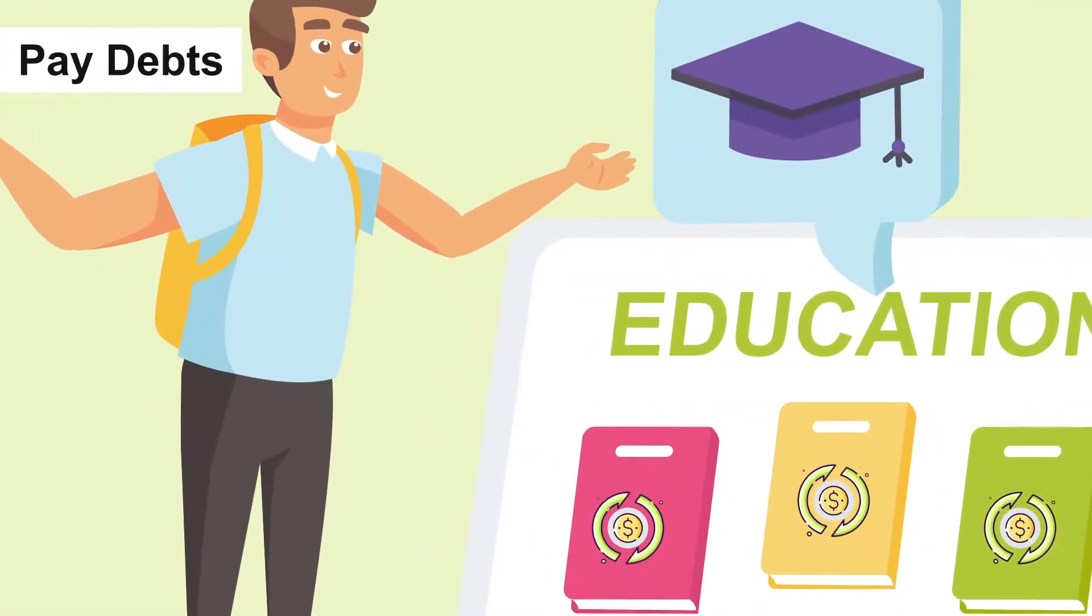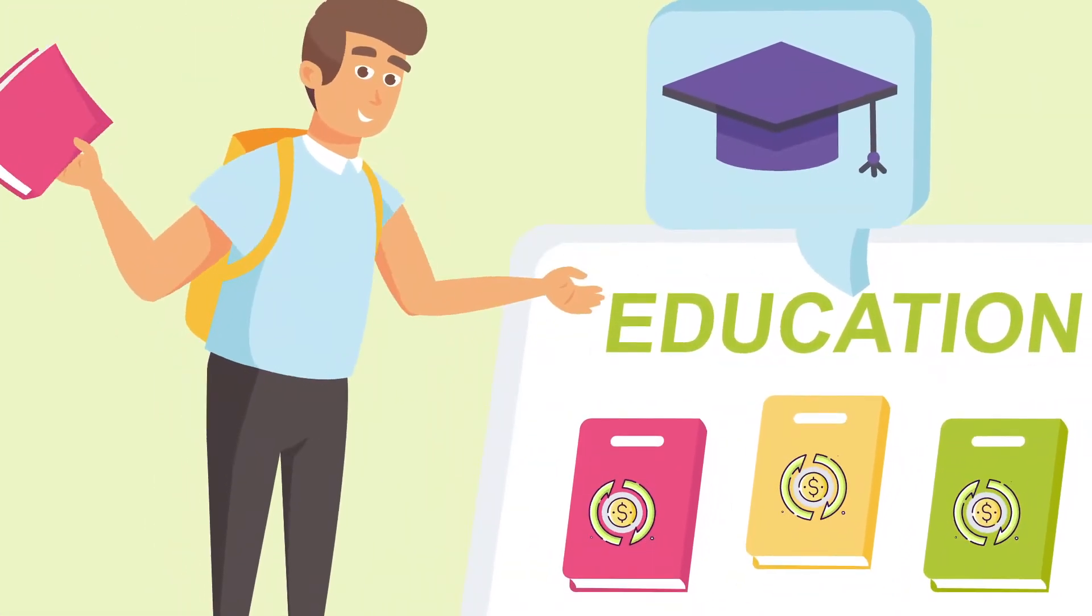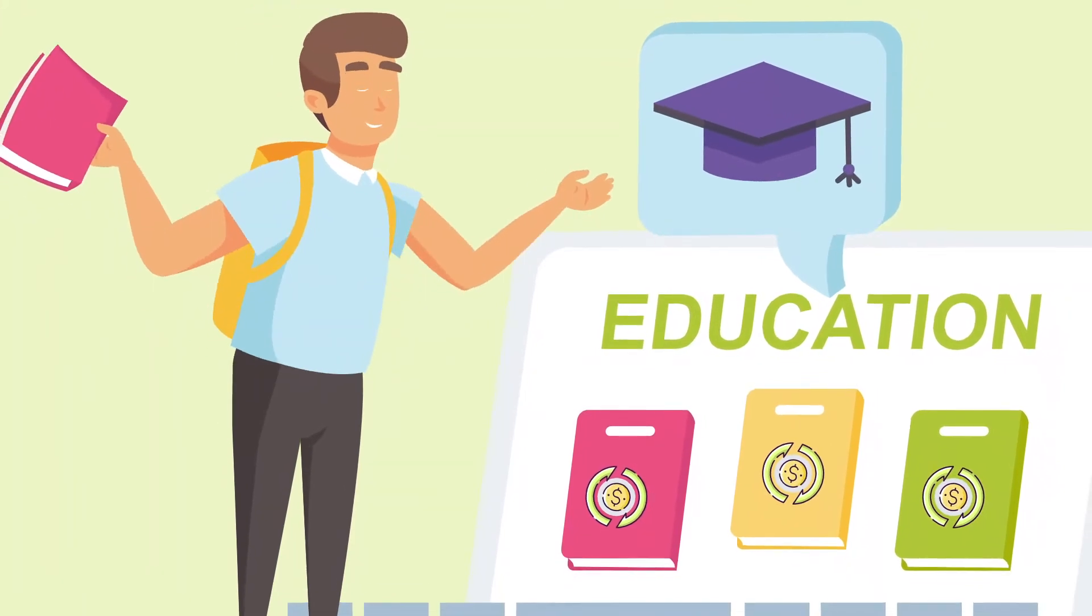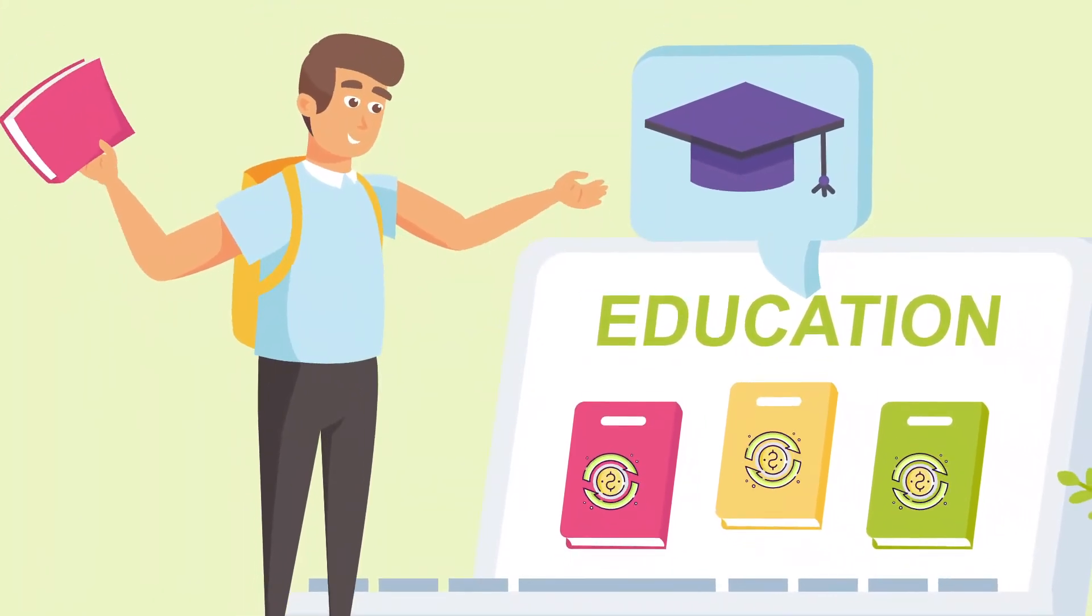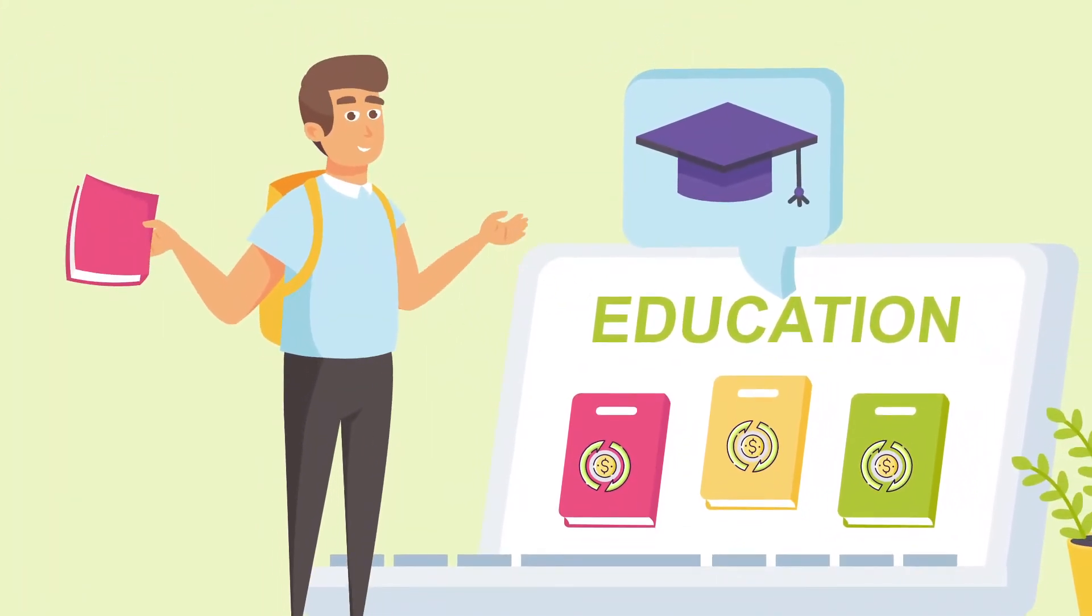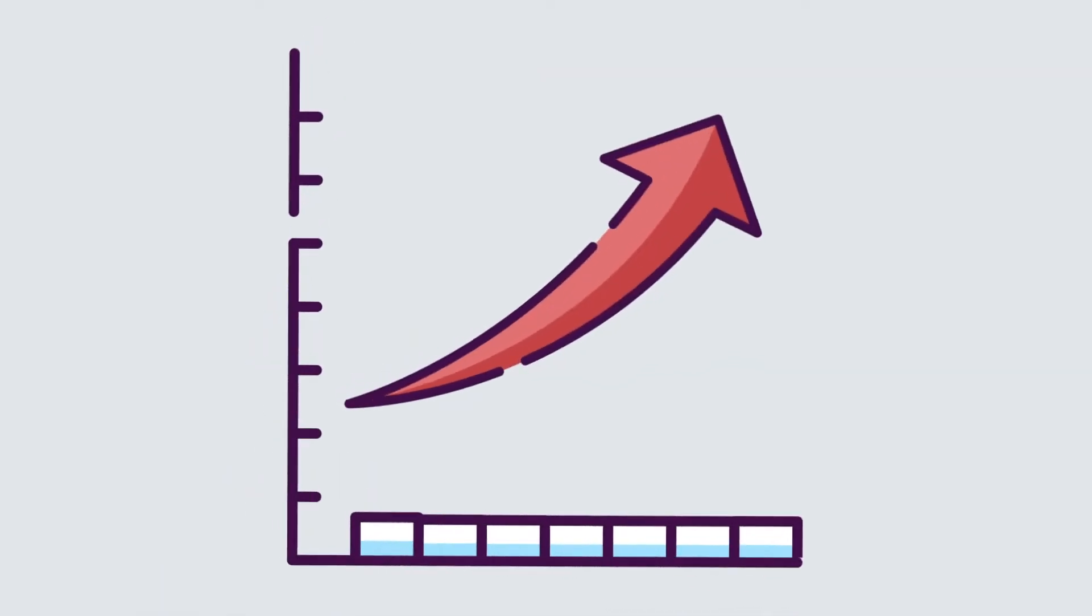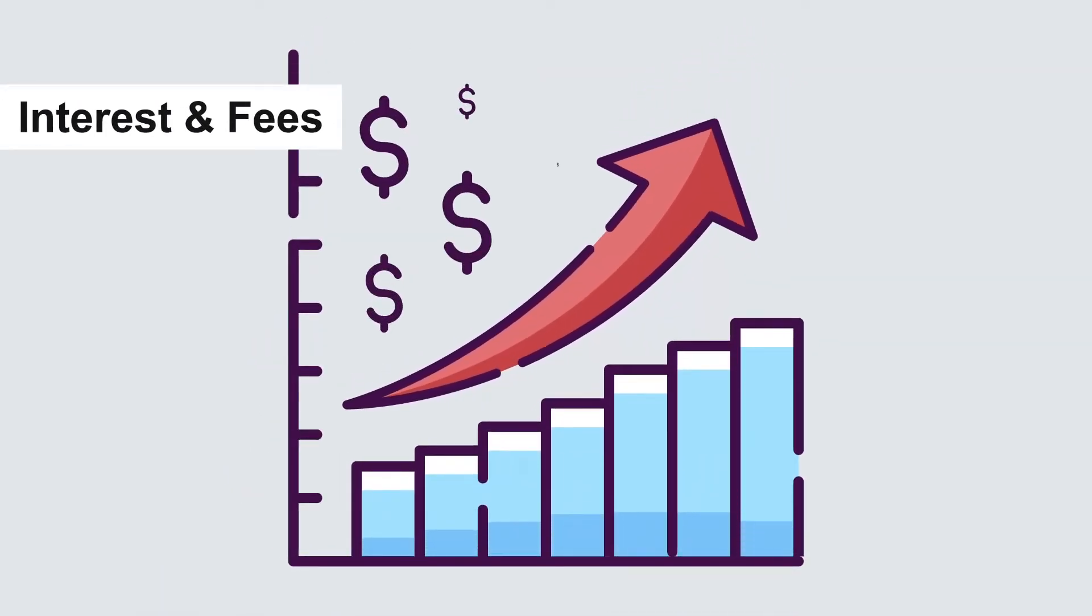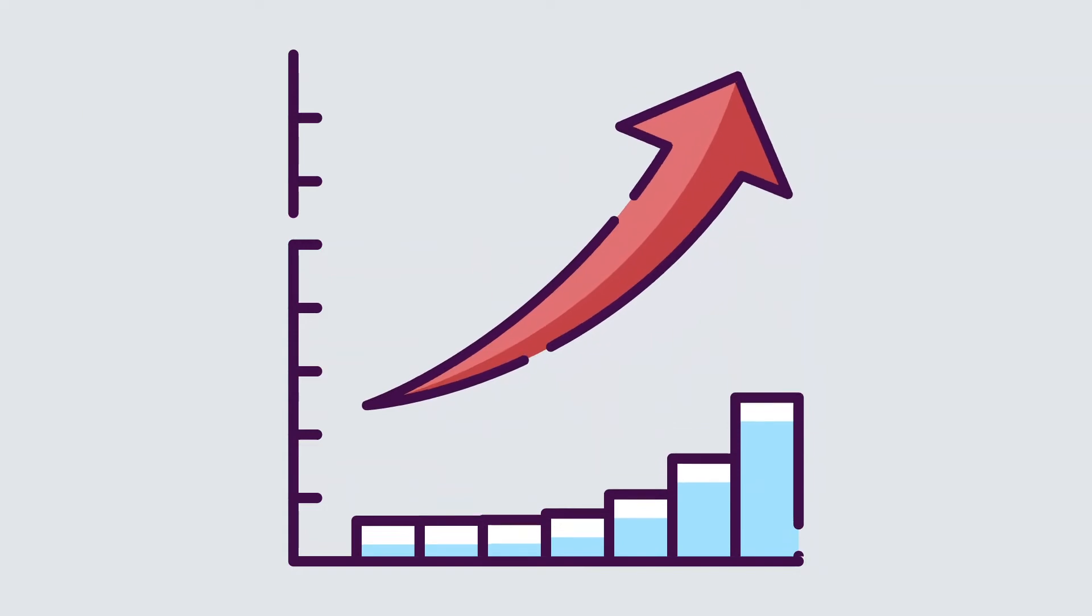Life insurance can also be used to pay off debts. Things like student loans, car loans, mortgages, credit cards, and personal loans can be a huge burden on dependents after death. Don't forget about interest rates and charges when calculating the face value of your life insurance.